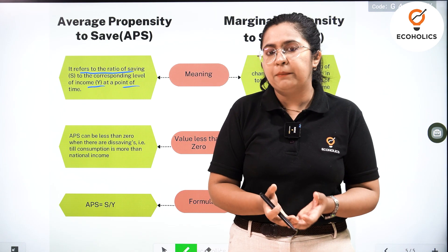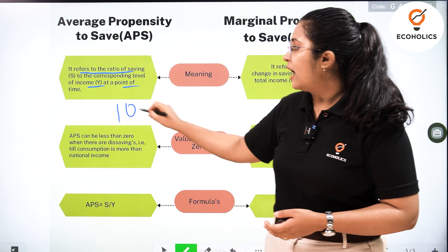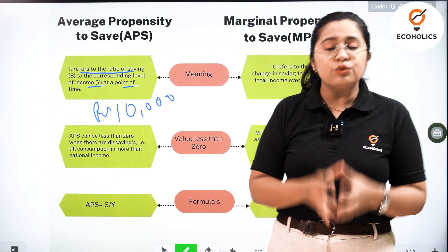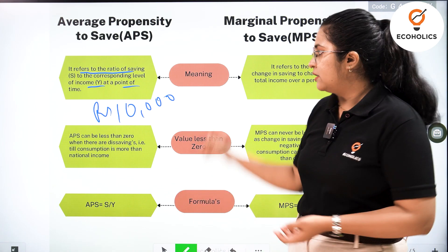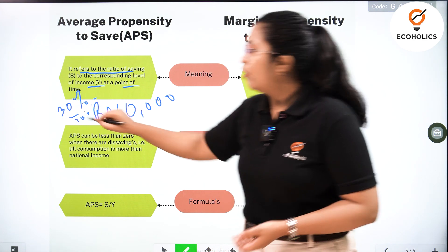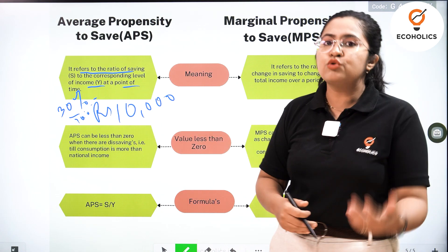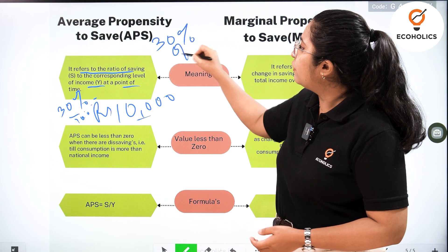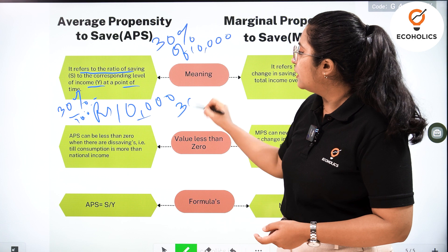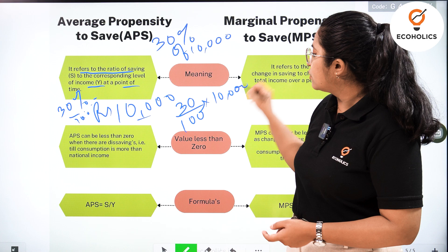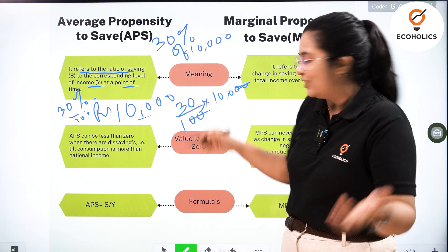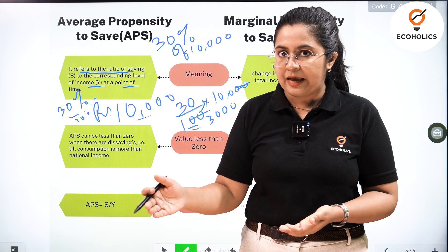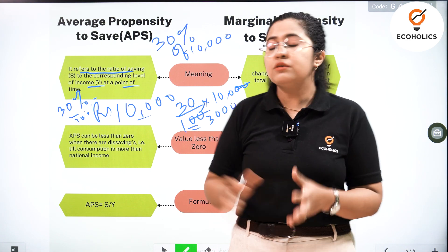Let's understand that with a small example. Hypothetically, let's say your income is 10,000 rupees and the savings you make out of that is 30%. So 30% of your income goes to savings. 30% of 10,000 rupees is calculated as 30 upon 100 multiplied by 10,000, which gives us 3,000. So out of your 10,000 income, you save 3,000 rupees — that becomes your savings.